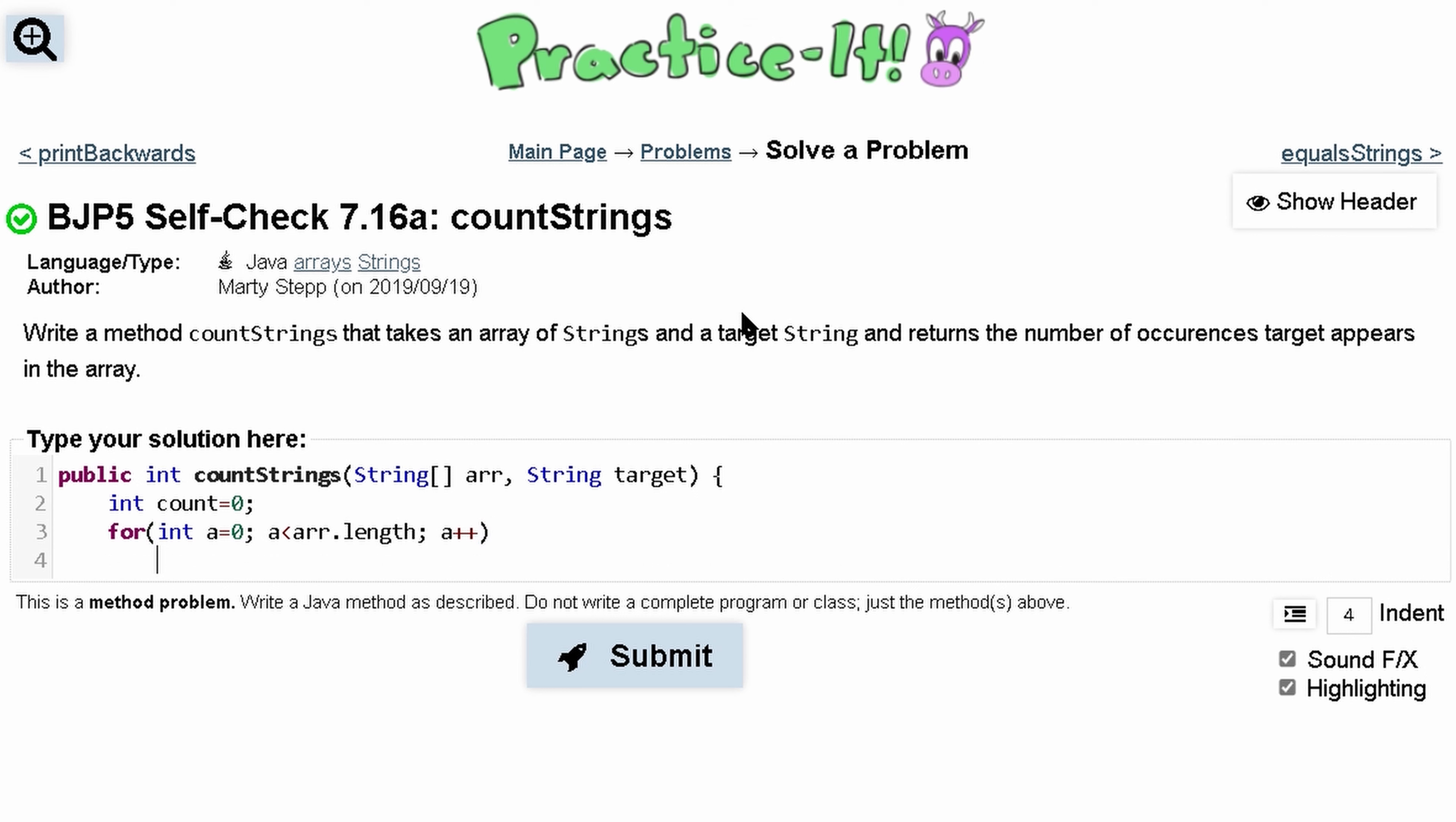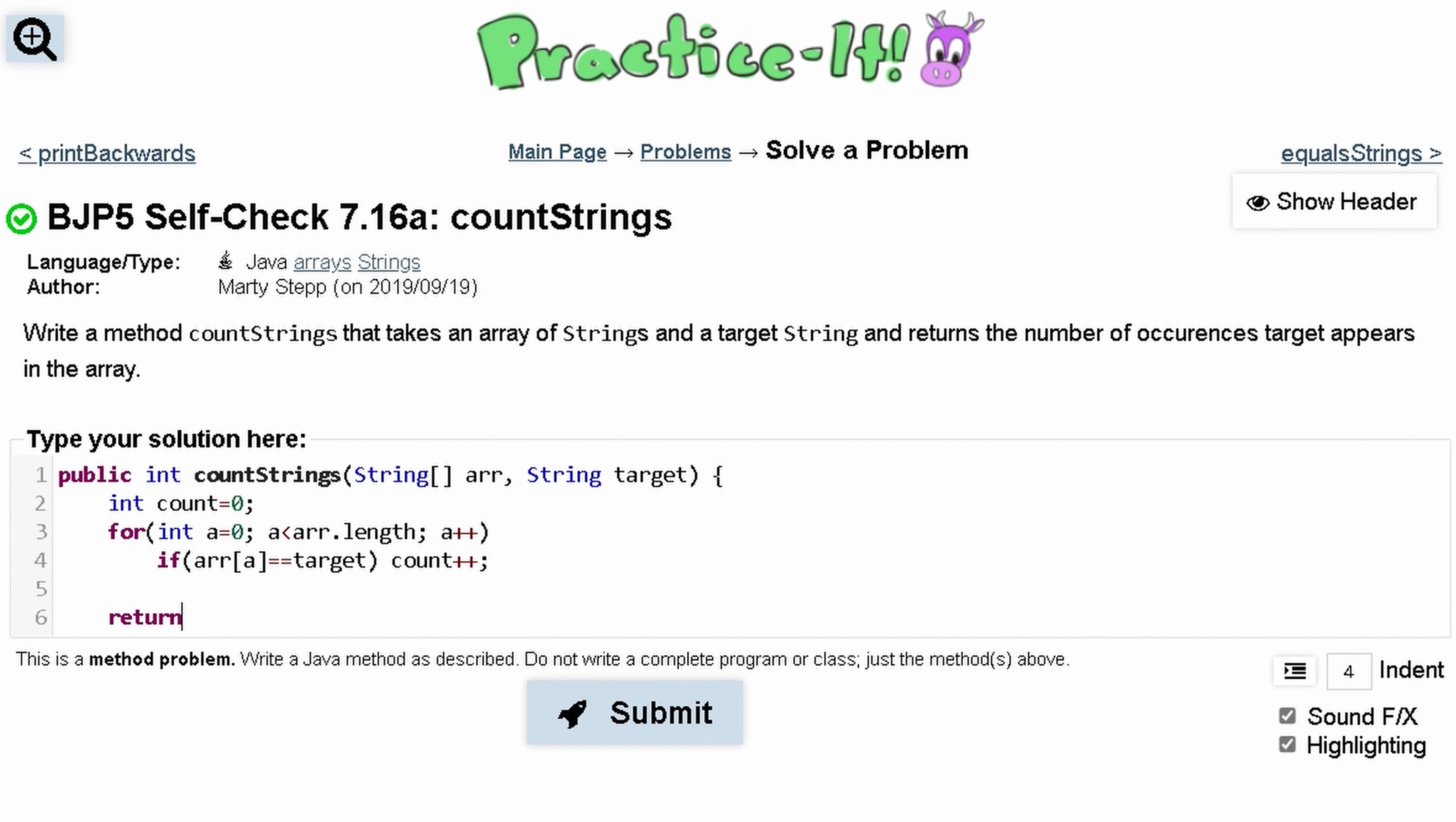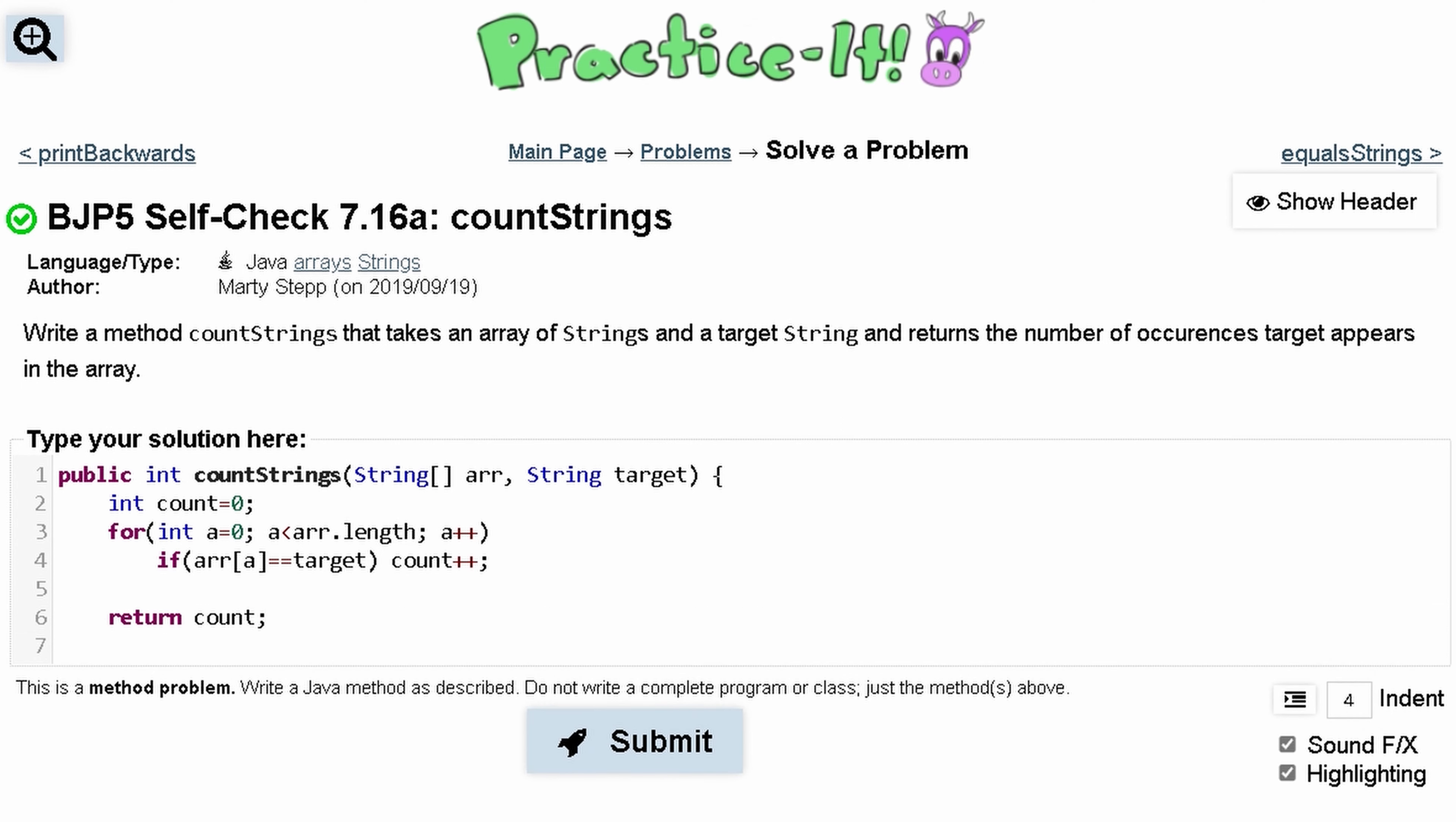Now inside of this for loop, we are going to have an if statement. We want to compare our current element, so arr with our current index, equals target. If it's equal to our variable target right here, we're just going to increment our counter, so we'll have count++. Then we can just return our count and end this.